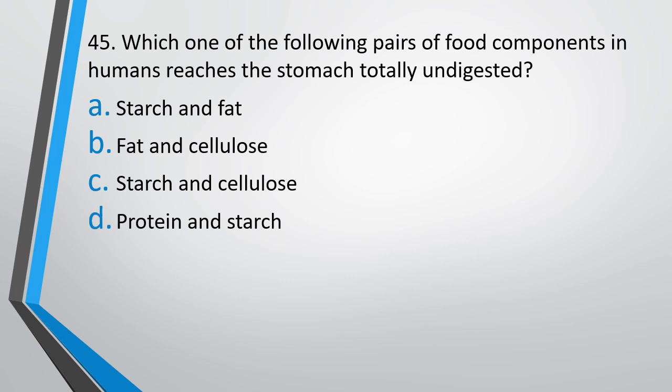Question number 45: Which one of the following pairs of food components in humans reaches the stomach totally undigested? Options: starch and fat, fat and cellulose, starch and cellulose, or protein and starch. The correct answer is option B, fat and cellulose. Remember, digestion of starch starts in the buccal cavity itself where salivary amylase digests 30% of the starch into the disaccharide maltose. So fat and cellulose are the food components whose digestion doesn't occur in the mouth and starts only in the stomach.